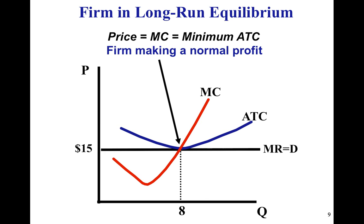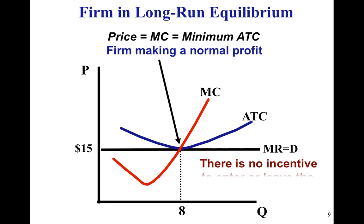Here's another, slightly larger graph of that same firm. The key point is where all three things come together: marginal cost, minimum ATC, and marginal revenue — which equals price for a price-taking or perfectly competitive firm. That is the point of normal profit, where there's no incentive to enter or leave the market.